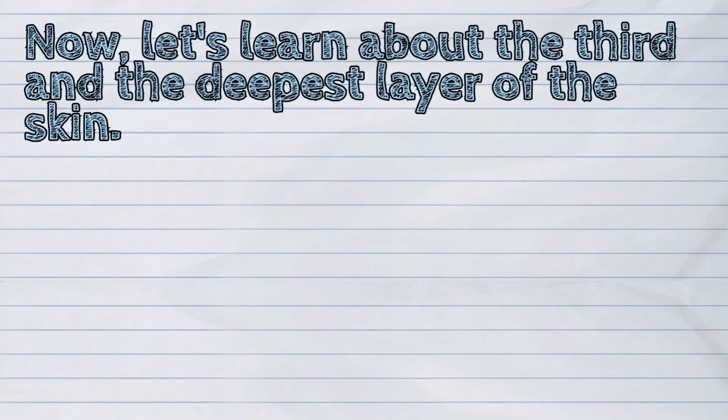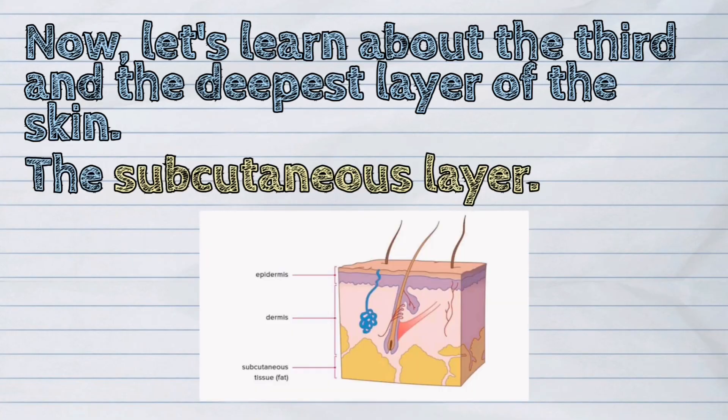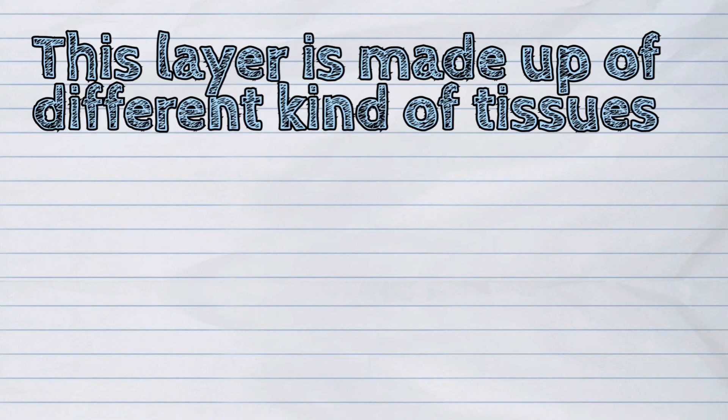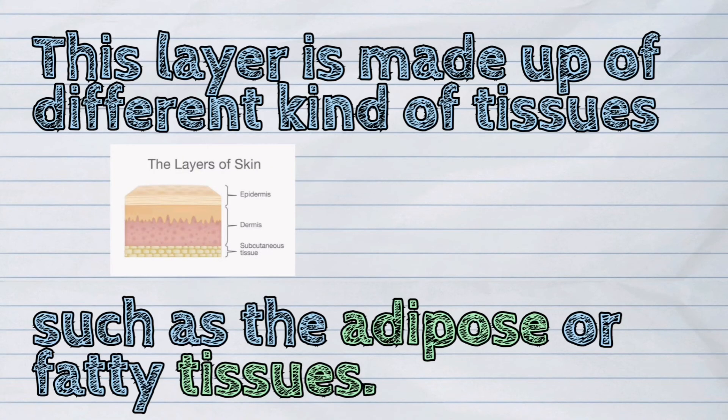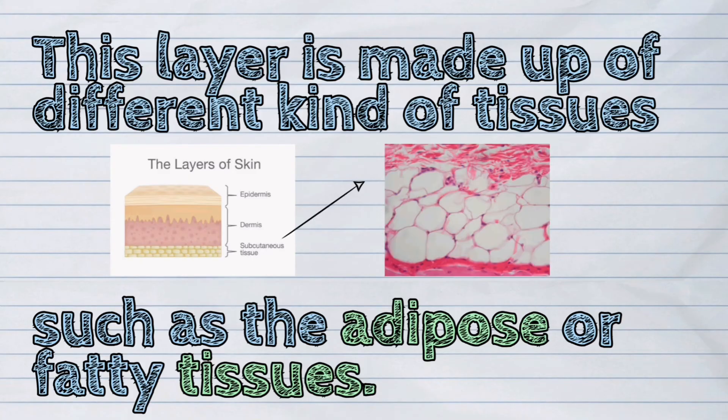Now, let's learn about the third and the deepest layer of the skin, the subcutaneous layer. This layer is made up of different kind of tissues such as the adipose or fatty tissues.